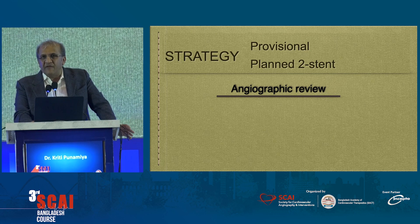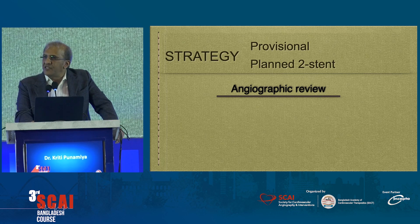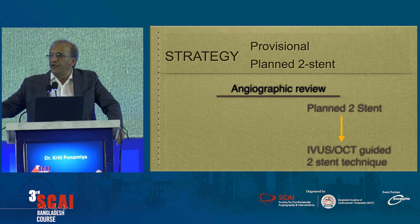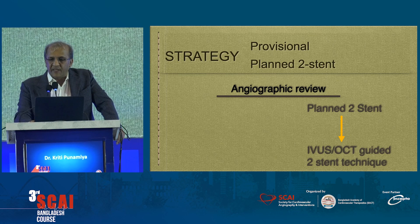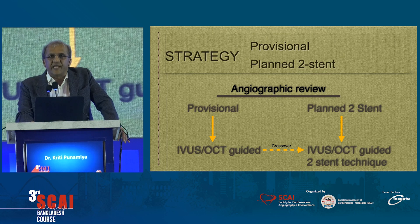When to use provisional versus a planned two-stent strategy: most of us can look at an angiogram and say this will require two stents — you don't need IVUS to determine a two-stent strategy. Once you know you're going to have two stents, all you need to do is plan angioplasty based on the IVUS. But when you have a provisional strategy, you do an IVUS, and sometimes based on the IVUS you say: no, this is not possible — we have to have two stents.